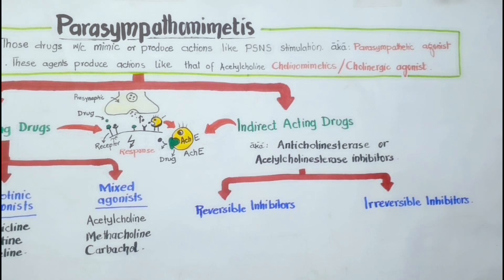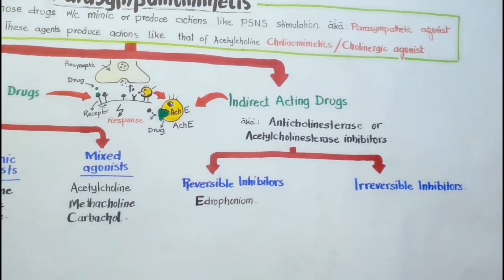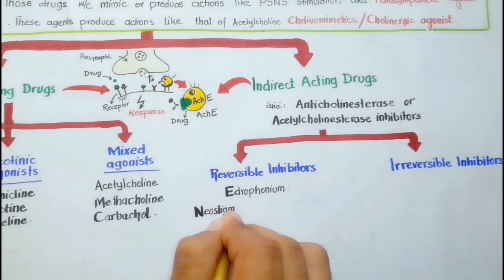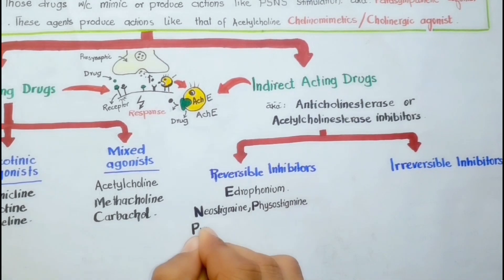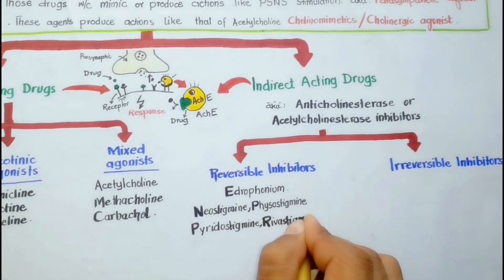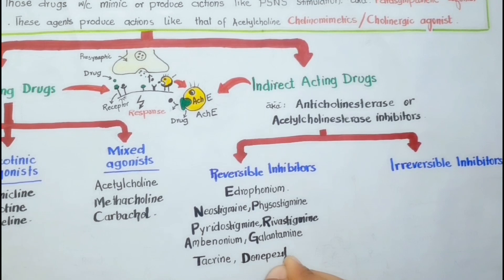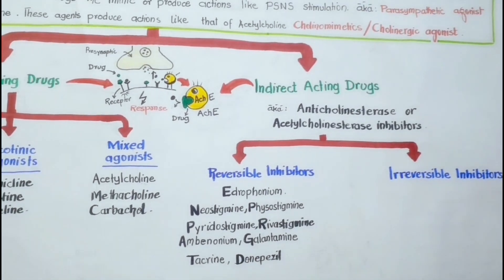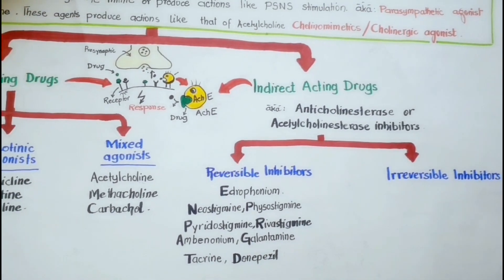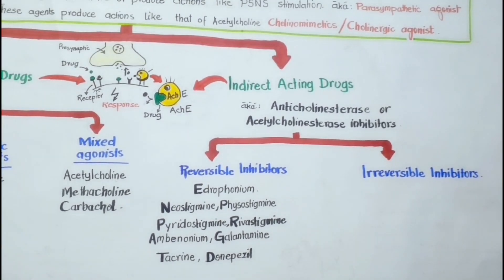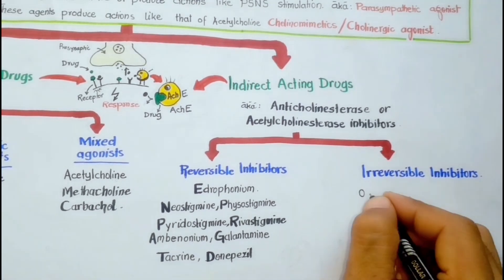The reversible agents include edrophonium, neostigmine, physostigmine, pyridostigmine, rivastigmine, ambenonium, galantamine, tacrine, and donepezil. Among these, edrophonium is a quaternary alcohol while the other drugs are carbamate esters.